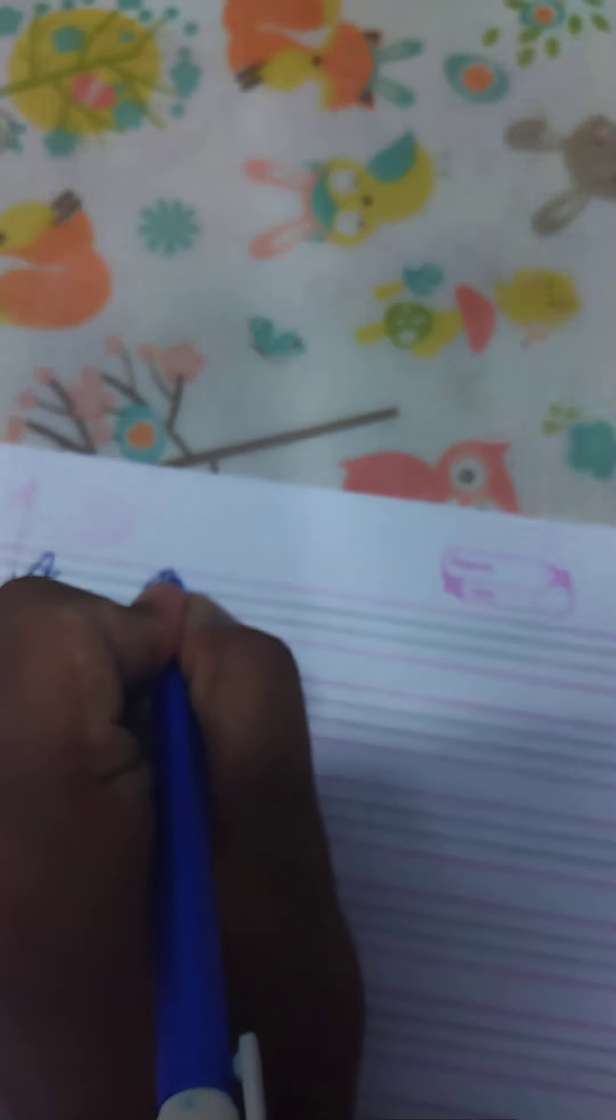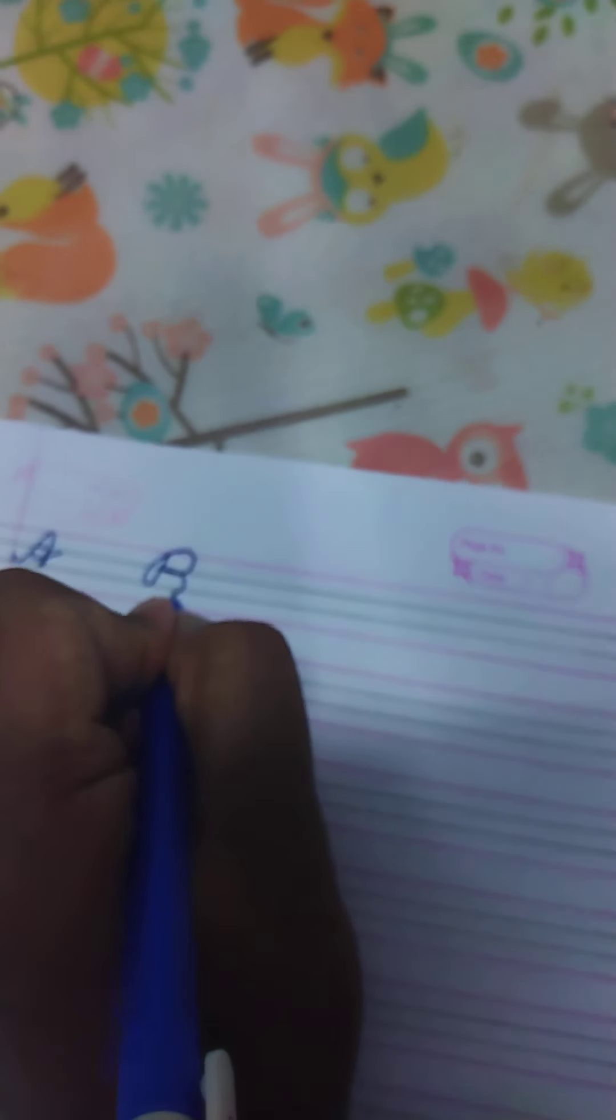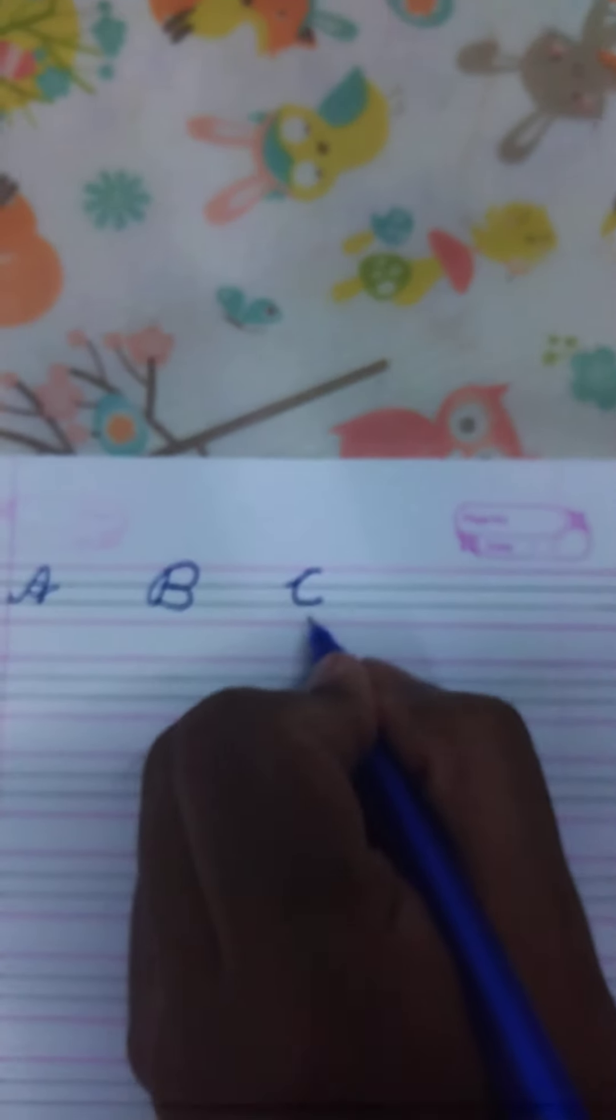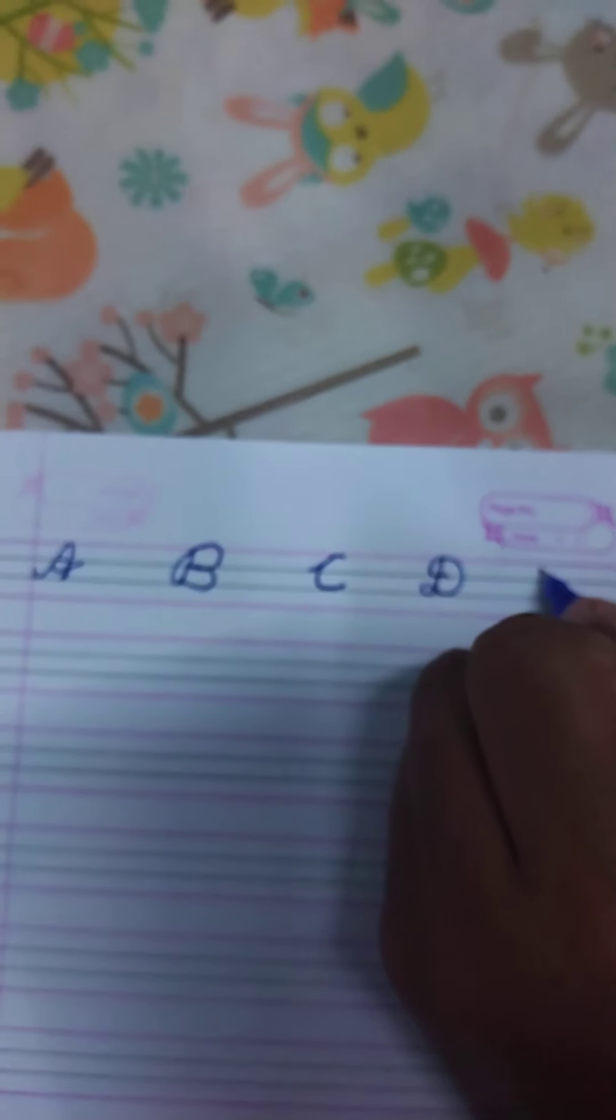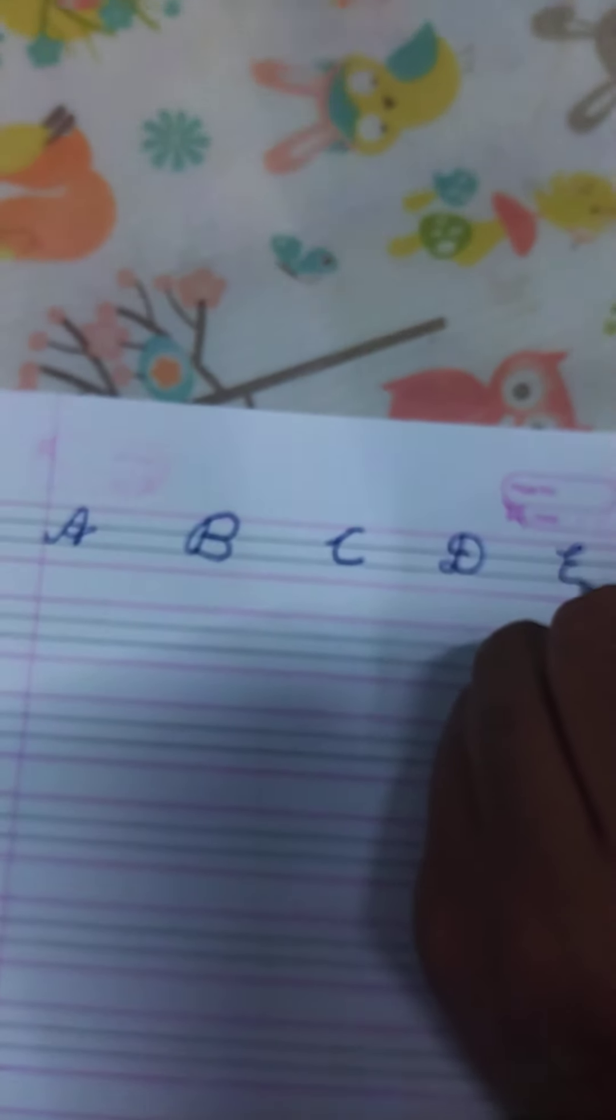Good evening everyone, today we can start learning about how to write cursive ABC. Let's start from capital letter now. We are going to start writing A, we have to write like this. A, and B should be like this. And C, we have to write start from here and stop here, do not cross the line.